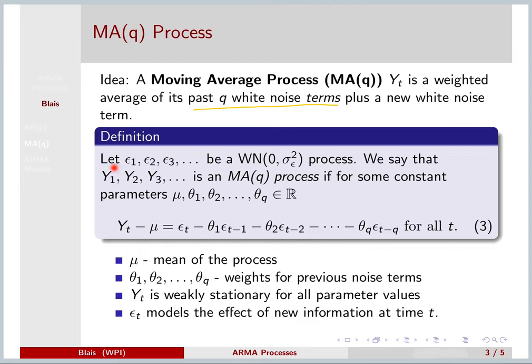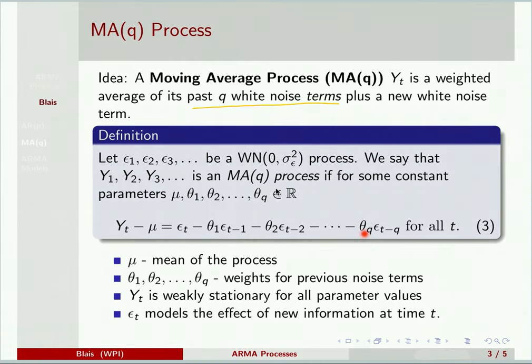So our formal definition says we have our white noise process, and we say Y₁, Y₂, and so on is an MA(q) process if for constant parameters μ, θ₁, θ₂, up to θ_q. And we see the defining equation says that Y_t today differs from its mean with a new noise term, but then we have a piece of yesterday's noise term, and a piece of the noise term from two days ago, down to the piece of the noise term from q days ago.